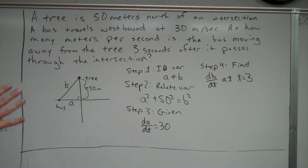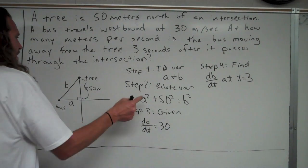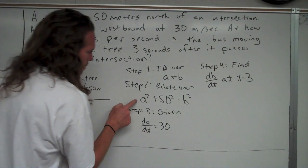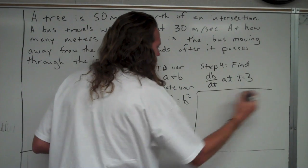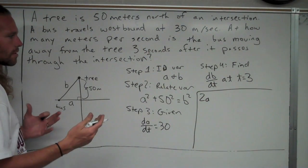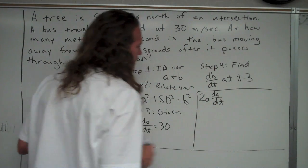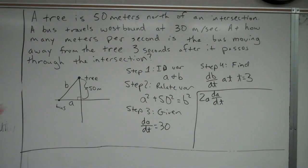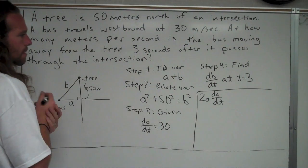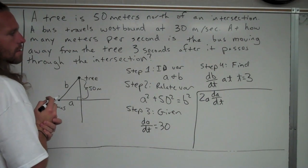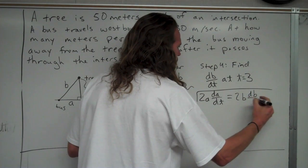Now we take the derivative of our equation to get dA/dt and dB/dt terms. The derivative of A squared is 2A times dA/dt — because A is a function of time, this comes from the chain rule. The derivative of 50 squared is zero since it's a constant. The derivative of B squared is 2B times dB/dt. So our differentiated equation is: 2A(dA/dt) = 2B(dB/dt).